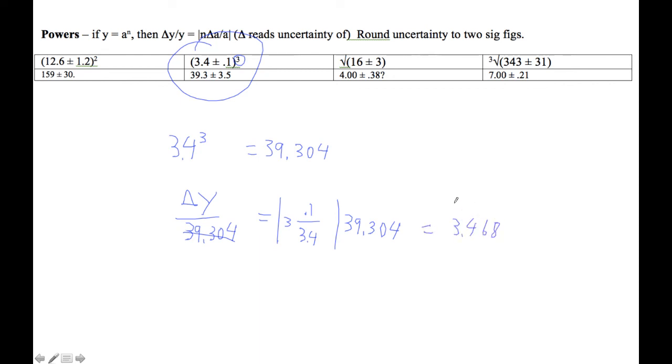So rounding that to two places is 3.5. Rounding this to the tenths place is 39.3. So because that has a tenths place, when we round it to two places, I round this to the tenths place.